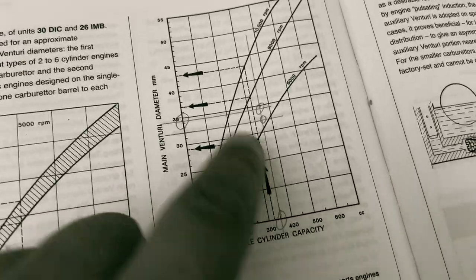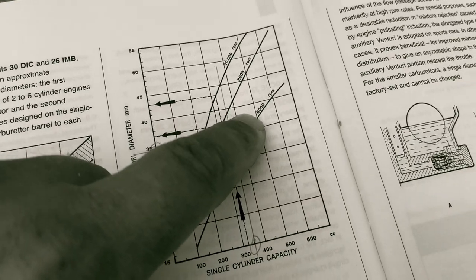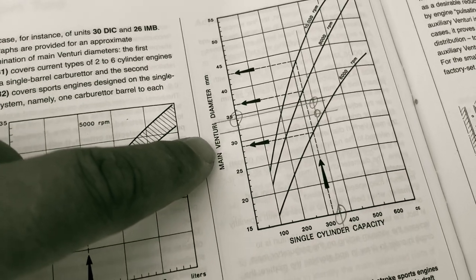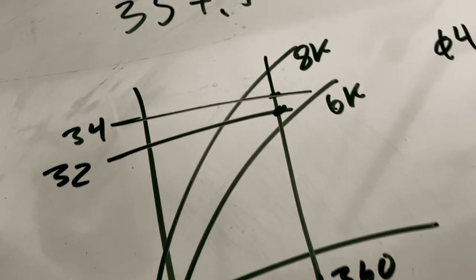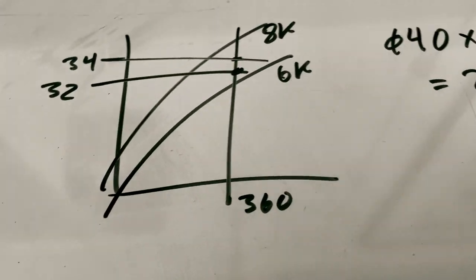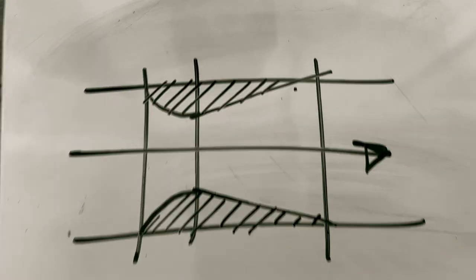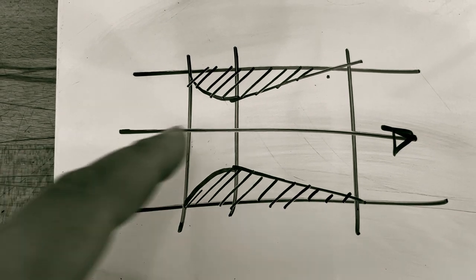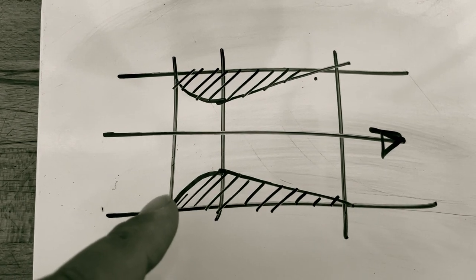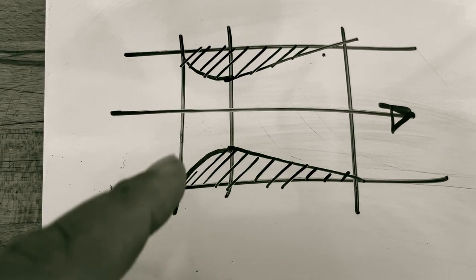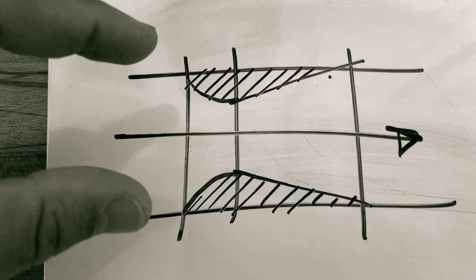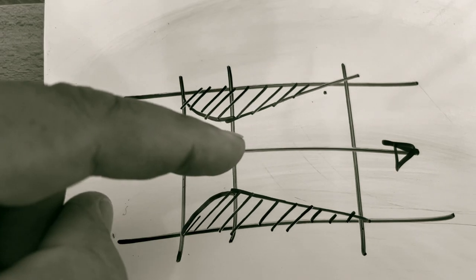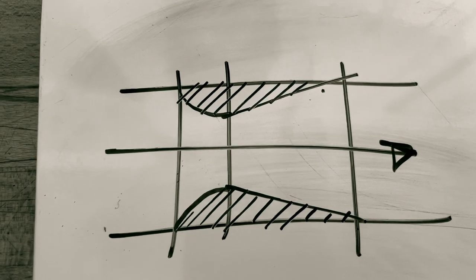I think we should try and go a little lower. Take the graph again and lower our expectations a little bit. Getting a little nearer the 6000 RPM line, we would maybe arrive at 32mm main venturi, like this.